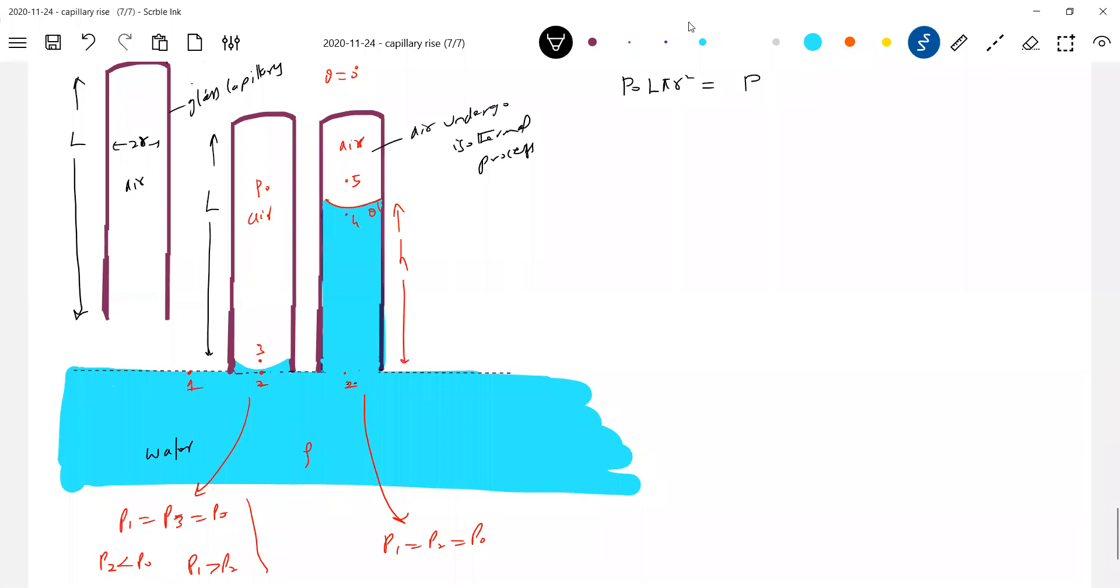P naught into L pi r square. Initially, final pressure P phi. What is the length? Let it be X. X into pi r square. Pi r square get eliminated. So therefore, P phi. We'll write one equation: P naught into L equal to P phi into X. This is equation one.